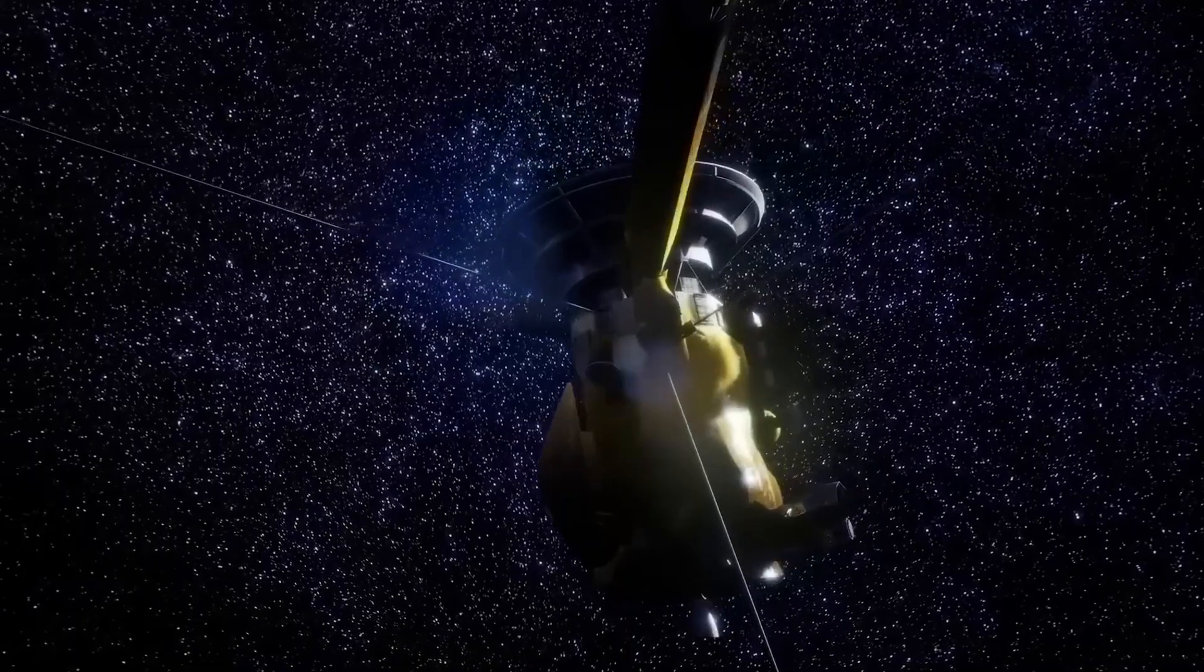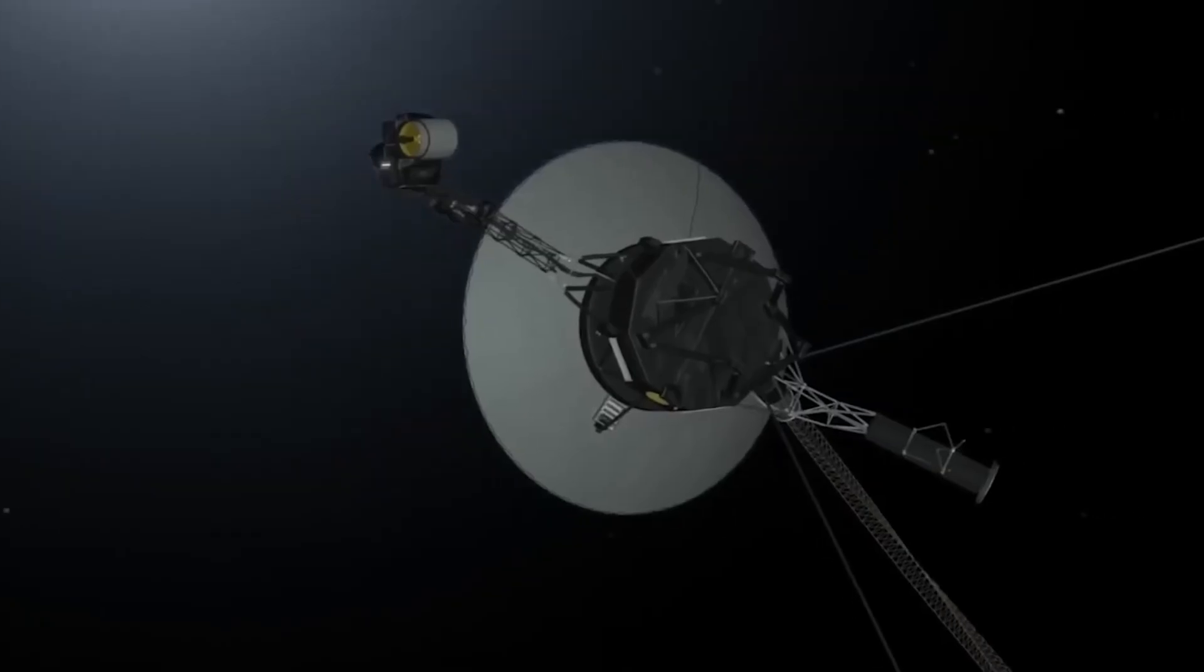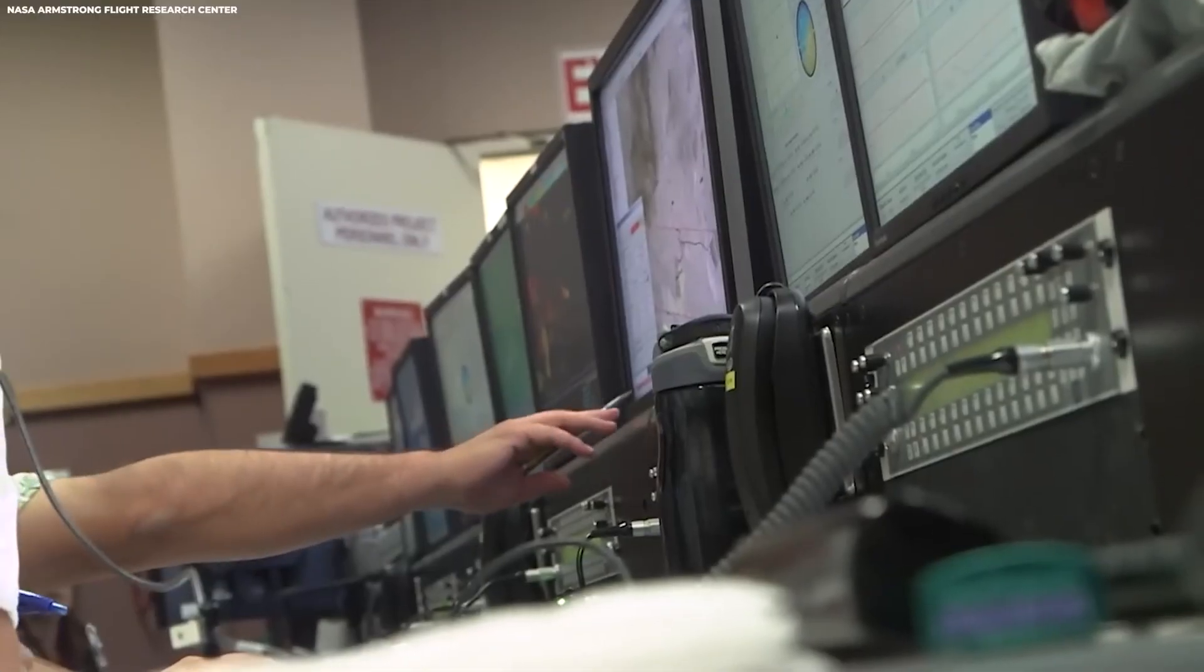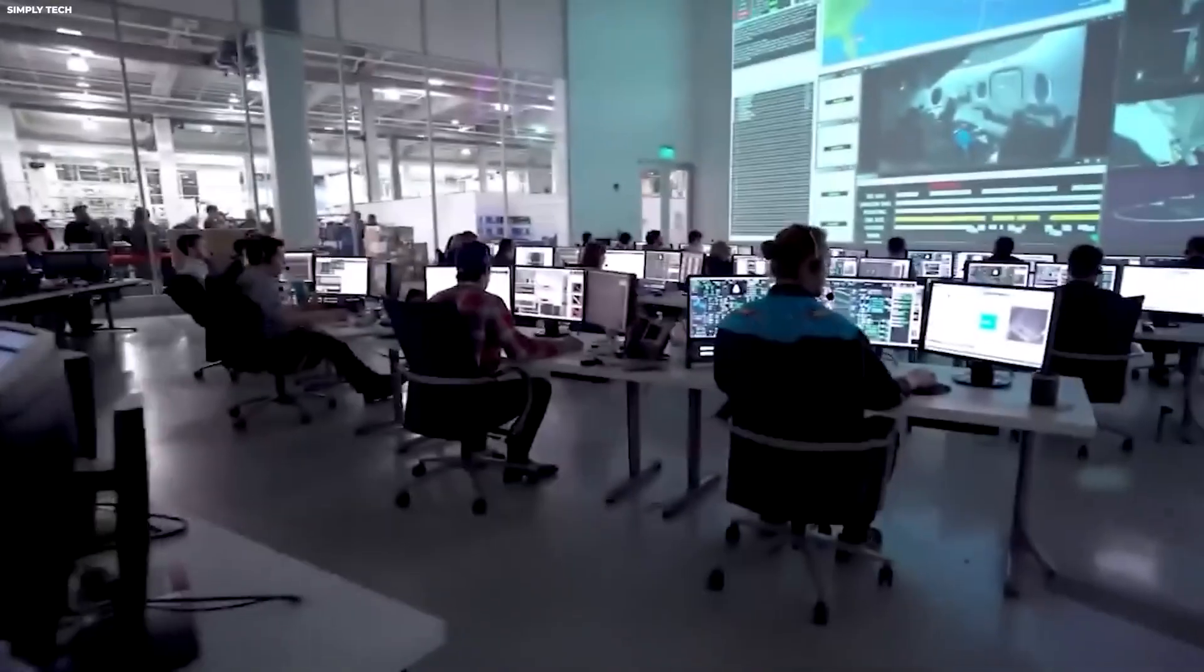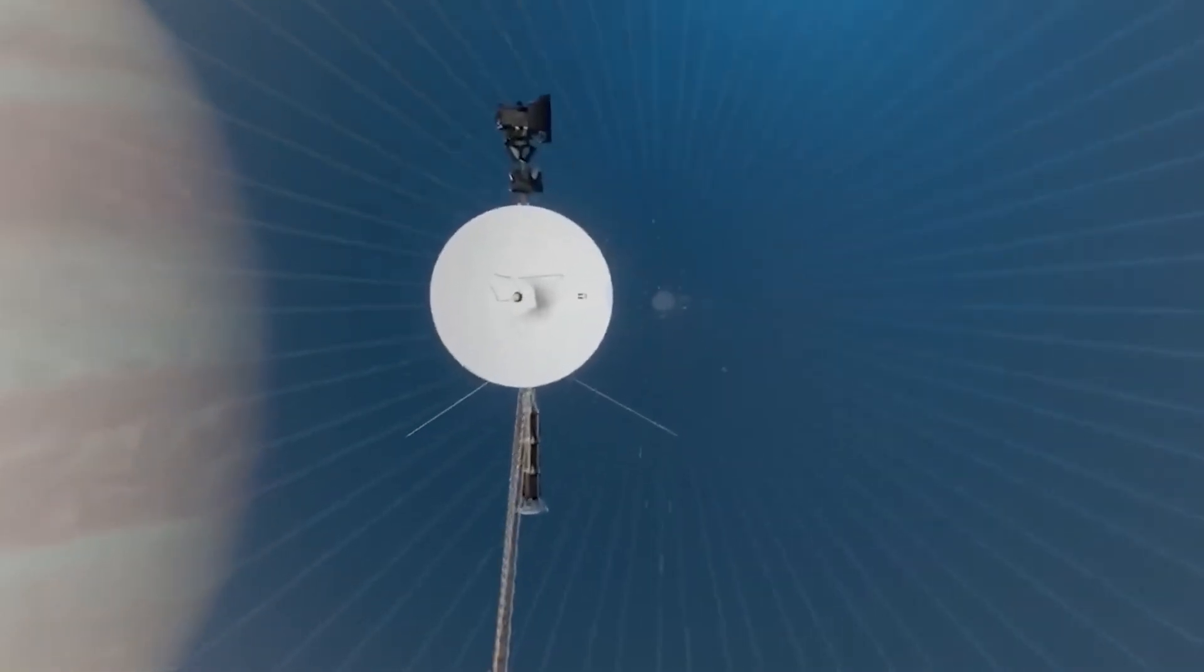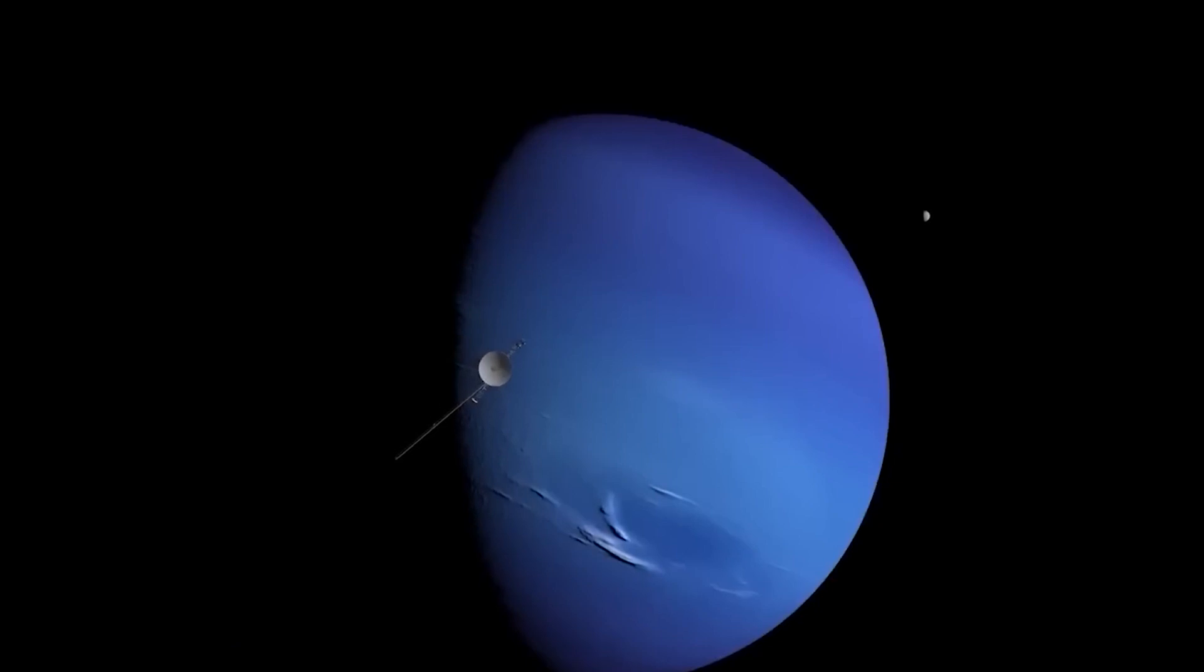More than 45 years after the launch, the Voyager 1 and Voyager 2 spacecraft are still operational, sending back information daily from the edges of our solar system. These probes have become the farthest ships in history, having traveled far beyond what was first imagined, which is impressive when you consider that their original mission was planned to last just four years.